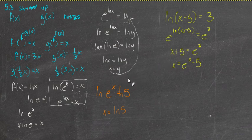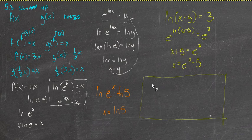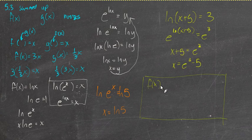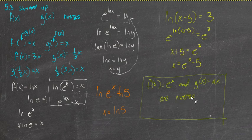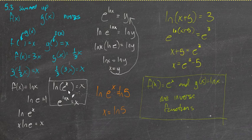So the first key fact: f(x) = e^x and g(x) = ln(x) are inverse functions. The important takeaway is that if we want to undo e^x, we can take the natural log of it and get x. And conversely, e^(ln x) = x.